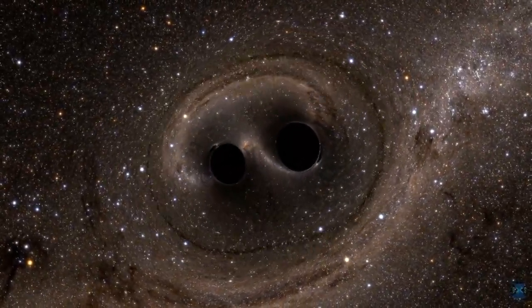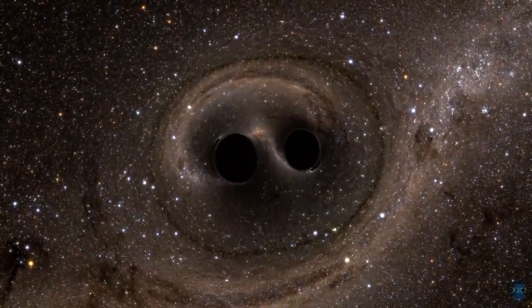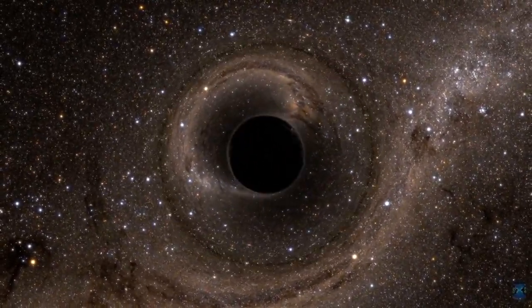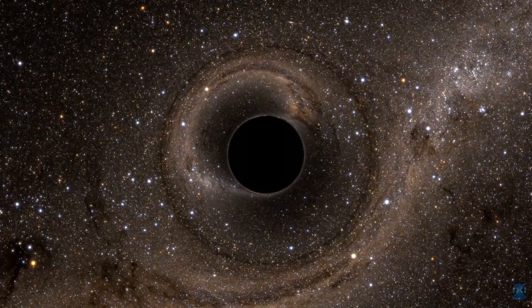The only visible traces of this spinning cataclysm would have been the way their gravitational fields warped the light of distant stars. Even as they collided and merged, there wasn't a flicker of light to be seen.